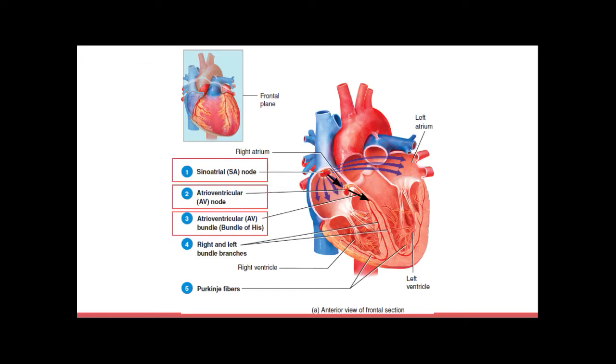And then from the bundle of His, the action potential propagates to the left and right bundle branches. The bundle branches, both of them, extend through the interventricular septum towards the apex of the heart. So the action potential is propagating that way.